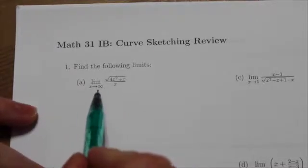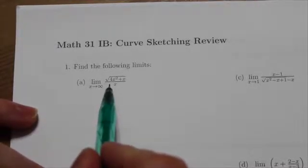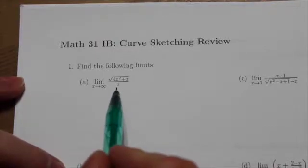It's actually a very straightforward limit. As x approaches infinity, the square root of 4x squared plus x over x.